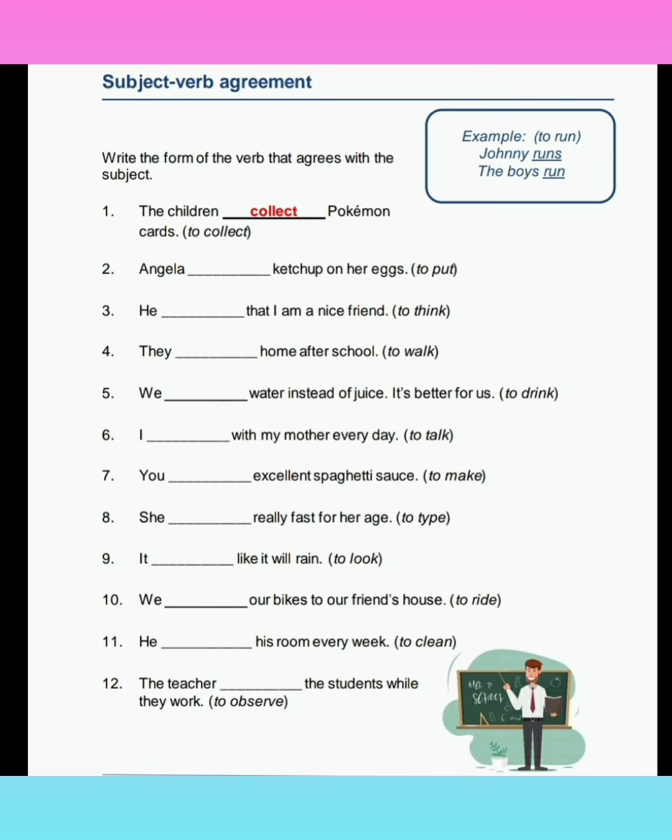Write the form of the verb that agrees with the subject. The first one has already been done. 'The children ___ Pokemon cards' — children is plural, that's why 'collect.' 'Angela ___ catch up on her sleep' — to put the correct form. 'He ___ that I am a nice friend' — to think. 'They ___ home after school' — to walk. 'We ___ water instead of juice, it's better for us' — I ___ with my mother every day — to talk.